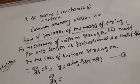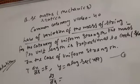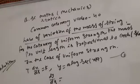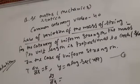The law of variation of the mass of string. For the catenaries of uniform strength, the mass per unit length is proportional to the hyperbolic secant.